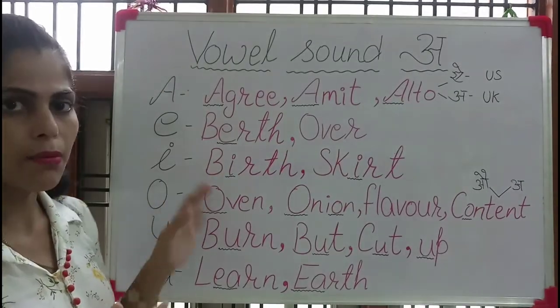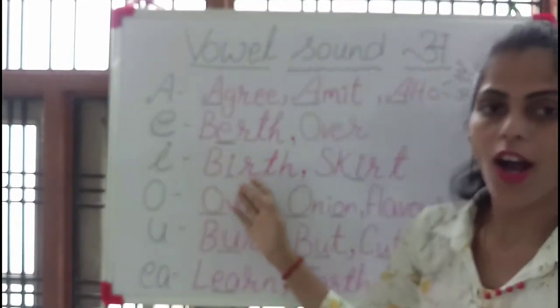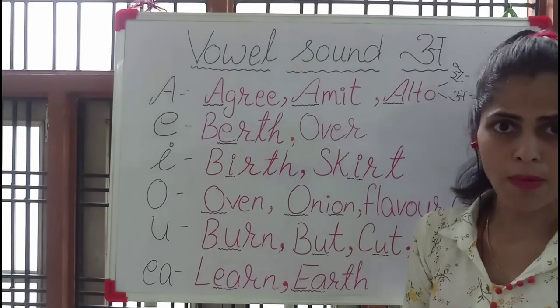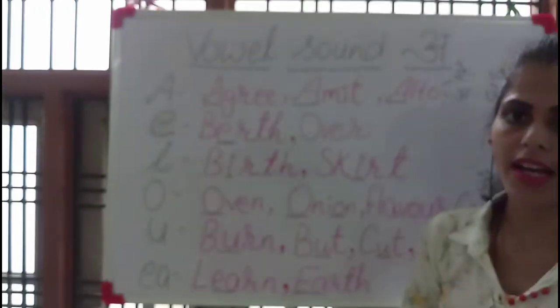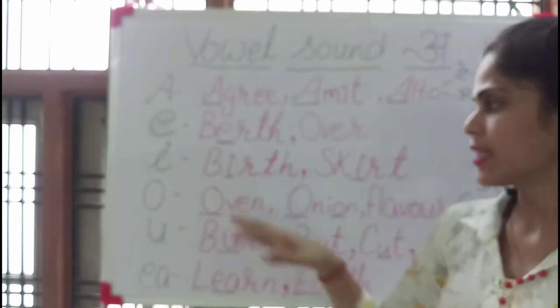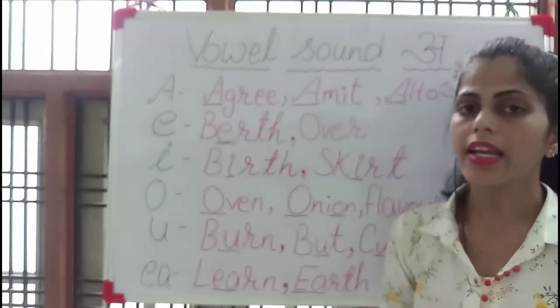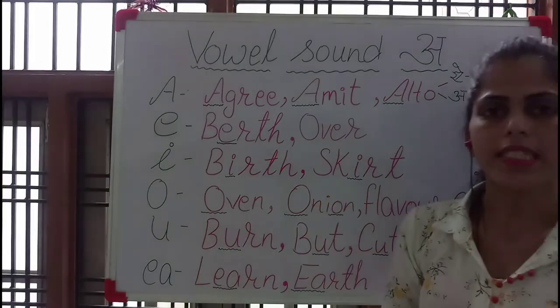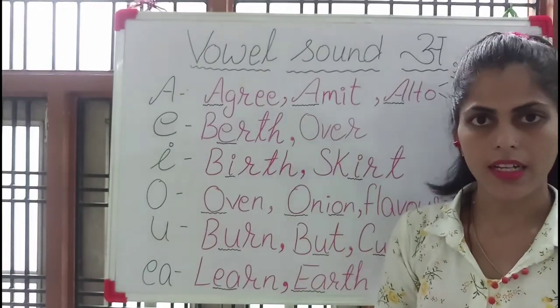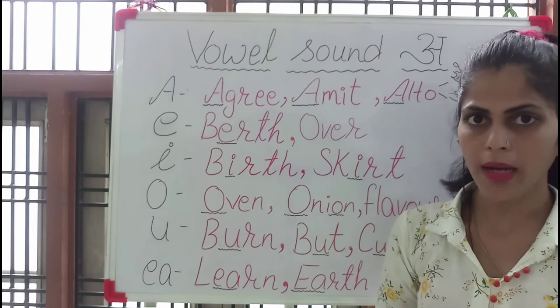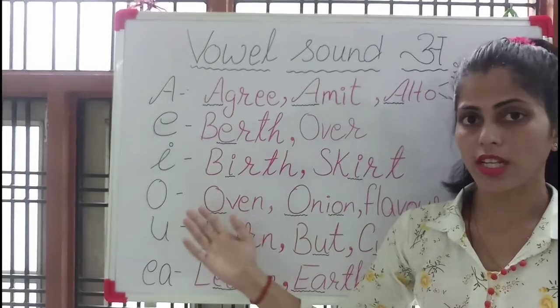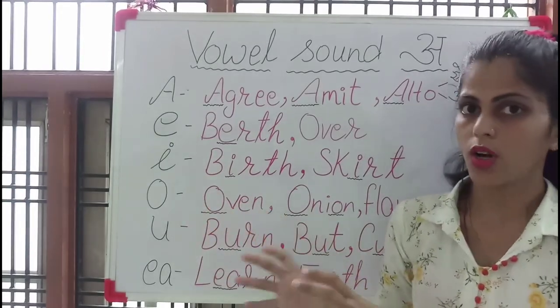Then we can go to I. I also makes the A sound. You can see here B-I-R — very common, as in 'Happy Birthday.' So I produces the A sound. If we are talking about R, either R is silent or you can hear it softly — Birth. Then Skirt — S-K-I-R — Skirt. Flirt. So the sound of A is produced here.